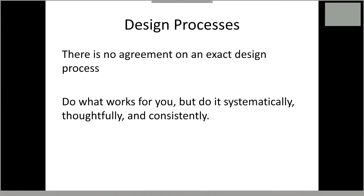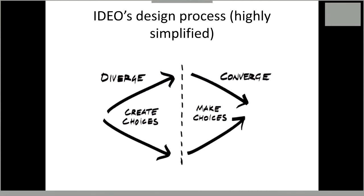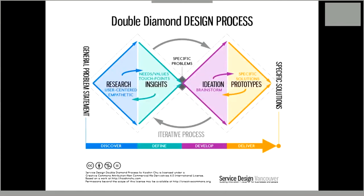There is no agreement on design processes — I walked you through one model but there are many, and you should do whatever works for you. The main point is to use a design process systematically, thoughtfully, and consistently. Some processes use a very simple iterative view: design, implement, evaluate, repeat. IDEO's process says we diverge and then converge. The double diamond design process — the hot thing right now — says: divergent research, convergent on insights, divergent on ideation, convergent on prototypes, then round and round. There are lots of similarities in these different processes — the point is not to choose any particular one, but to choose one and do it in a way that feels right to you.